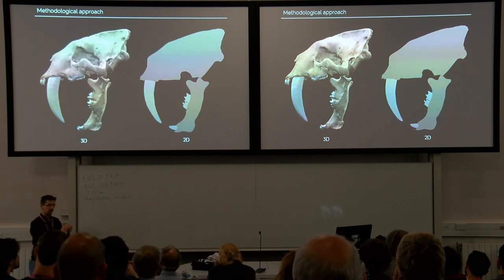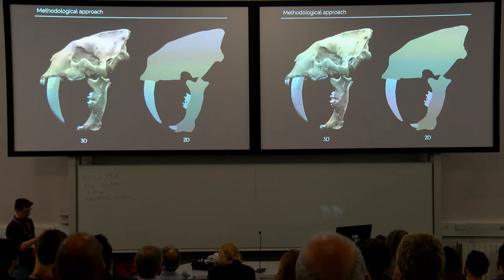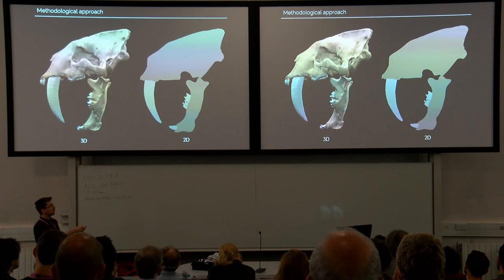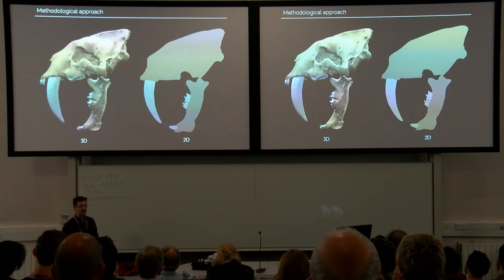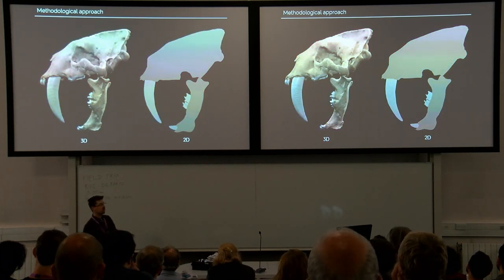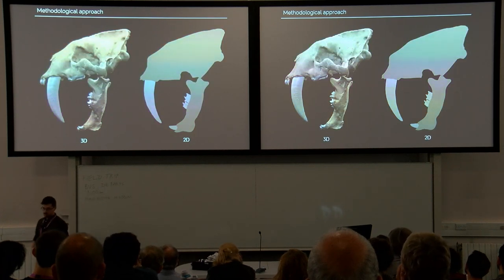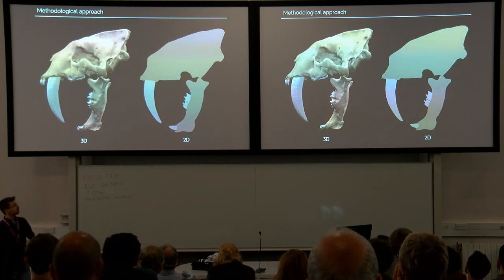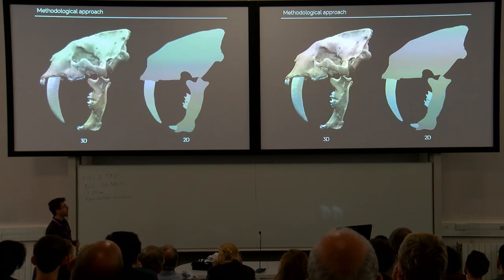In the 2D approach, the medial-lateral dimension is reduced to a fraction of its size, and we're considering only the lateral outline of both the skull and lower jaw. That obviously has several ramifications for how results are obtained and evaluated, which I'll address when we look more closely at the different performance criteria throughout this talk.